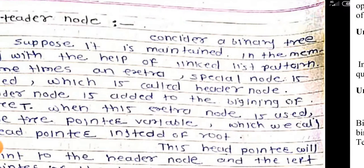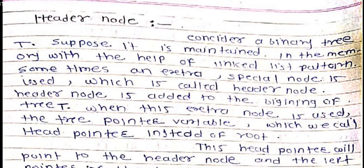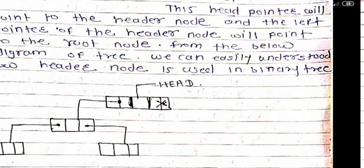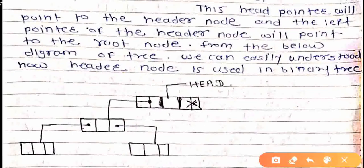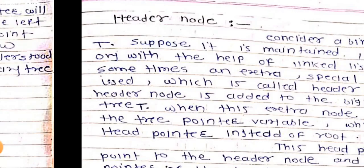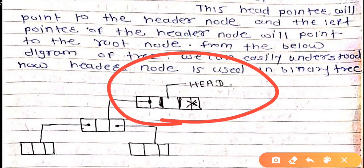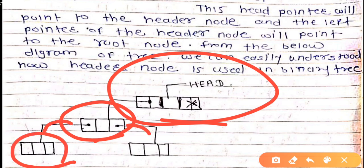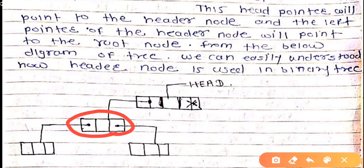Before showing anything, I would like to show this diagram. The diagram illustrates the header node concept. The header node is where your tree starts - from the root node. From this root node, this is the left successor and this is the right successor, as you can see here. There is a node that points to the root node.